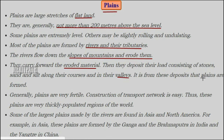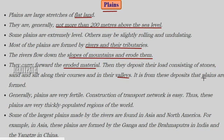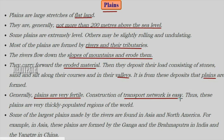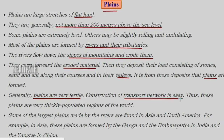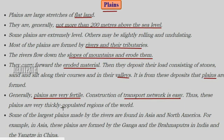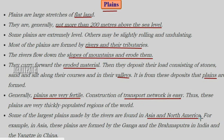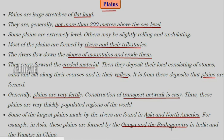From these deposits of sand, silt and stone, plains are formed at specific locations. Plains are very fertile and suitable for cultivation because they are at a flat, low surface. Construction of transport networks over plains is also very easy. In the Asian continent and North America there are many large river plains. In India, the Ganga and Brahmaputra rivers form plains, and in China the Yangtze River also forms plains.